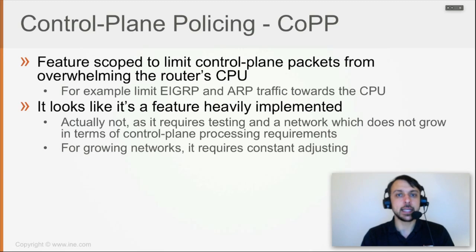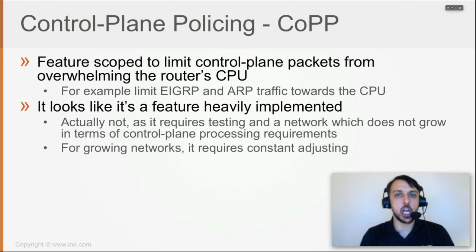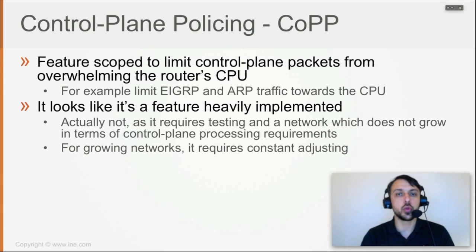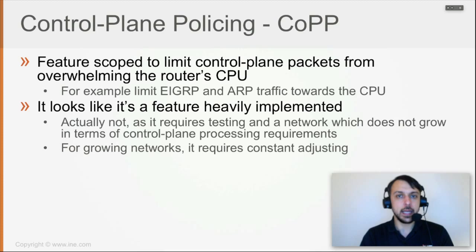When something like that happens — the whole network melting down and coming back up — your router won't be able to process all received EIGRP packets, and neither will any other router. That will cause a domino effect, and it may take a very long time for the network to converge because each router has to retransmit a lot of EIGRP packets back and forth.